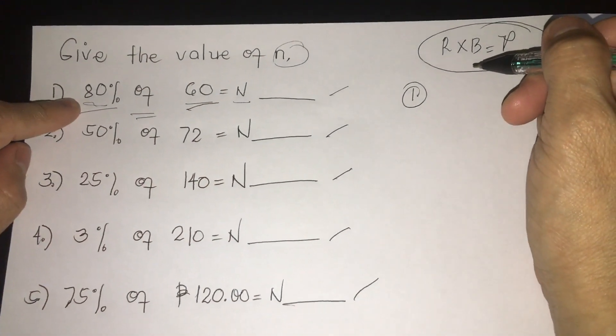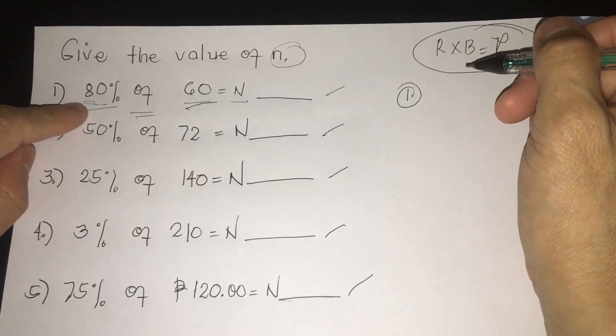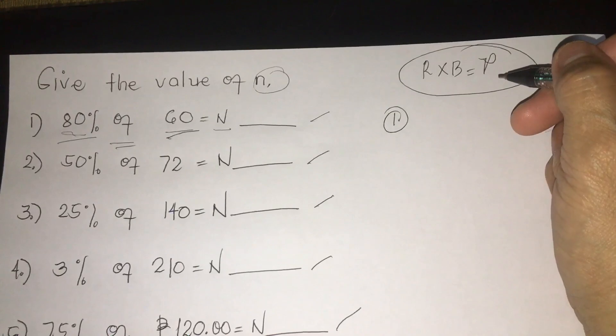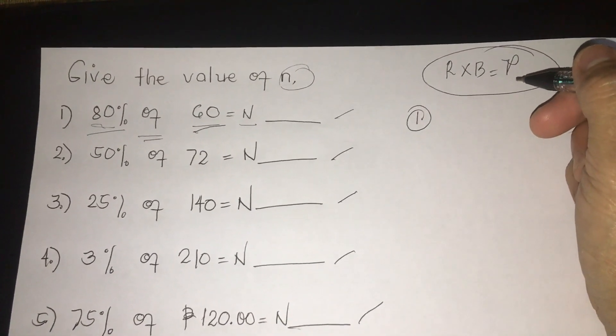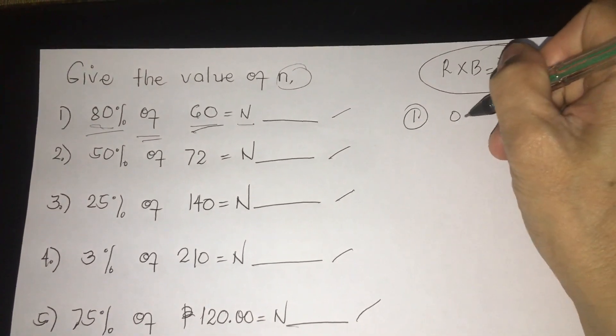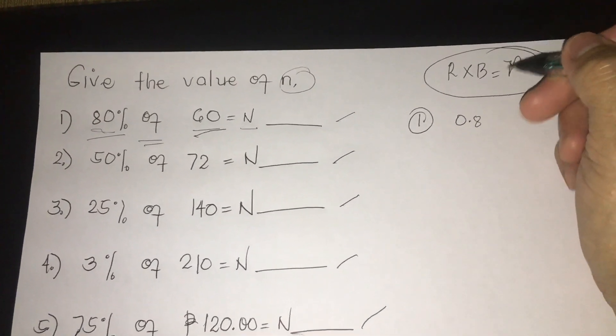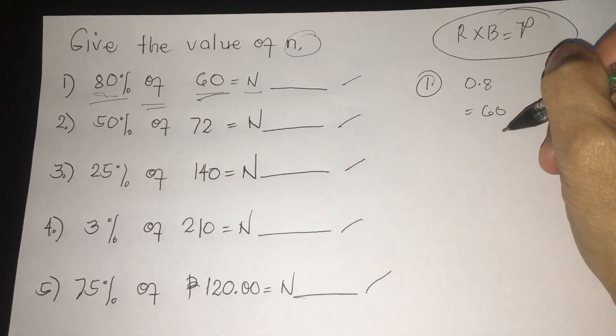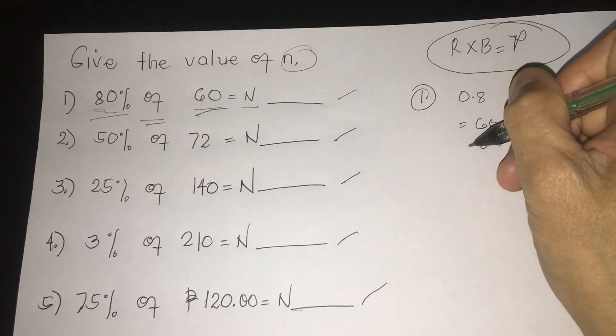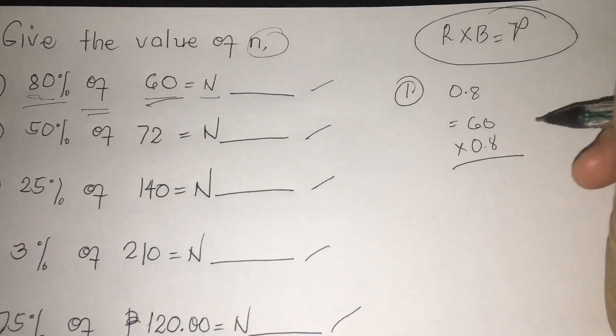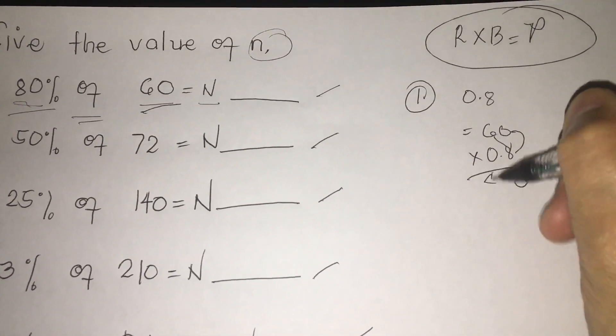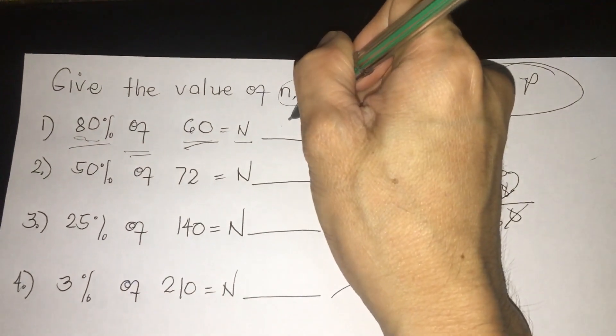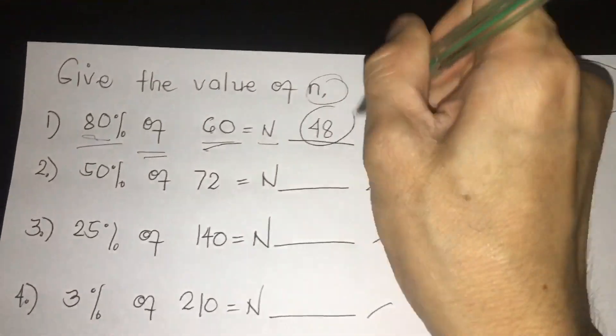So let's have first: 80% of 60 is equal to n. Remember class, you are going to convert from percentage to decimal form. So 80% in decimal: we have 80% of 60, we have 0.8. So we have 60 times 0.8. We are going to multiply. We have 60 times 0.8: 6 times 0 is 0, 6 times 8 is 48. Cancellation. So our answer is 48.